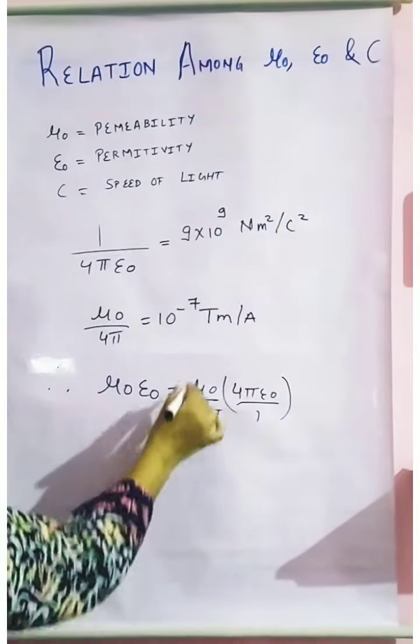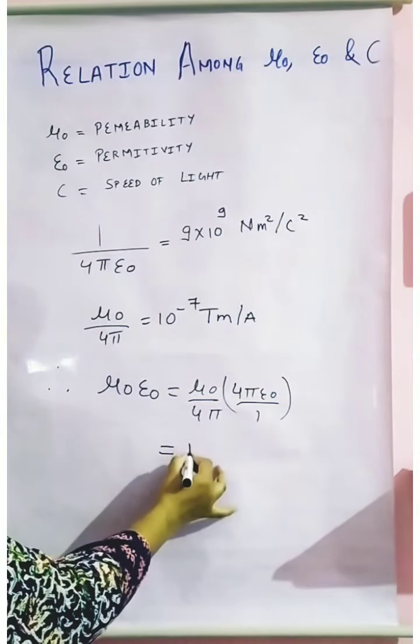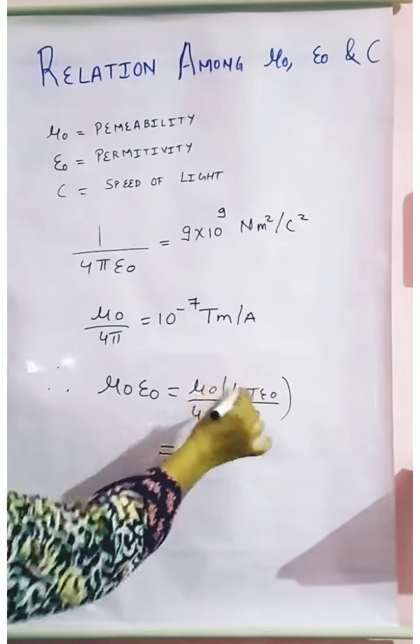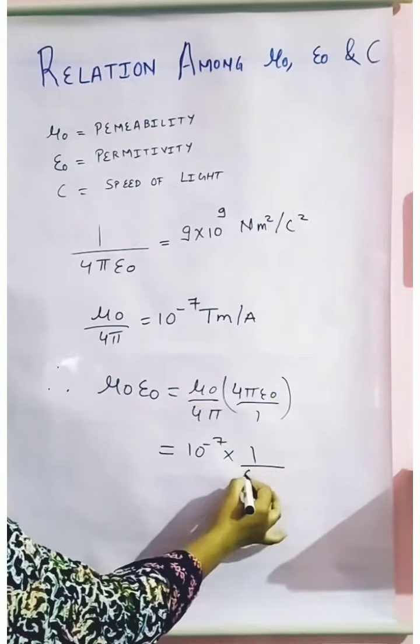So I am going to substitute the value. What is the value of this particular? This is 10 to the power minus 7. What is the value for this? This value I have 1 upon 9×10⁹. This is the value which I have.